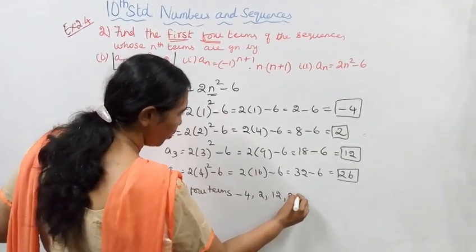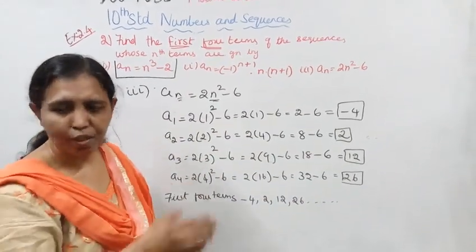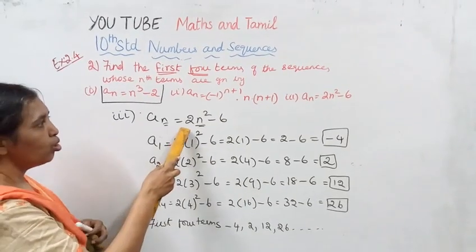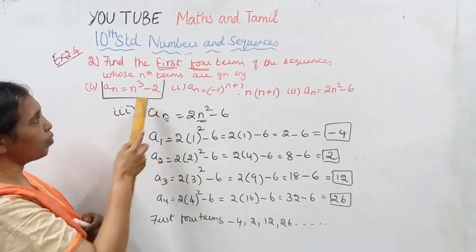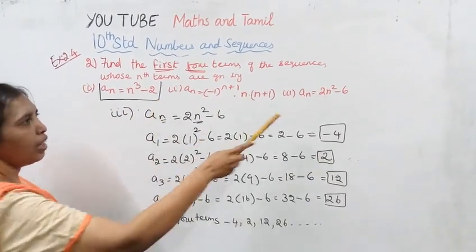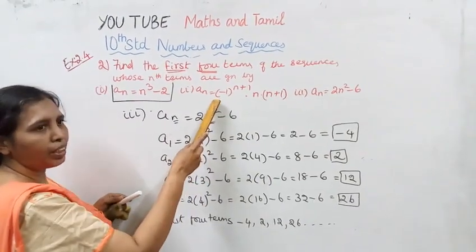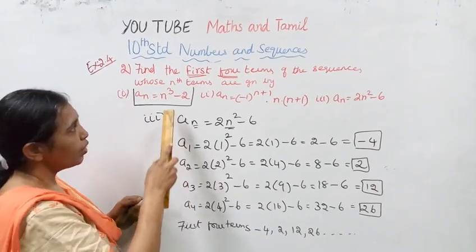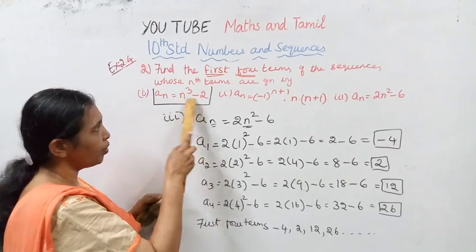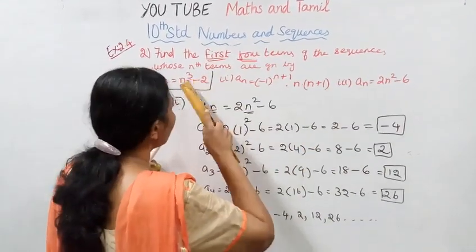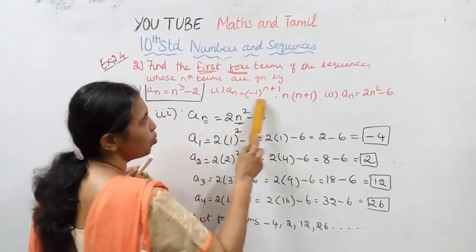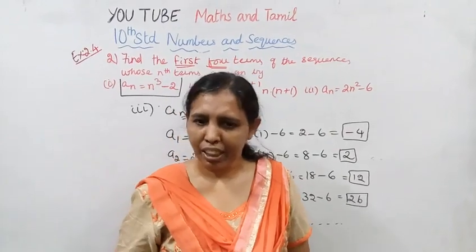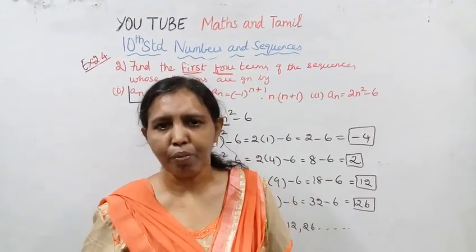First four terms are minus 4, 2, 12, 26. Practice this - it's easier. This channel helps you get 100 marks. Subscribe to the channel and click the bell button.